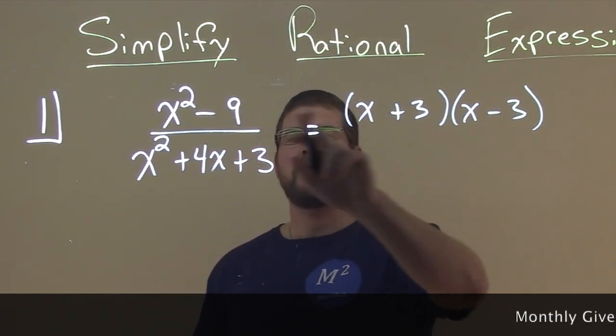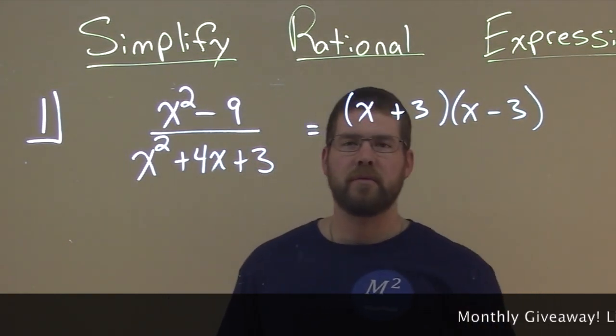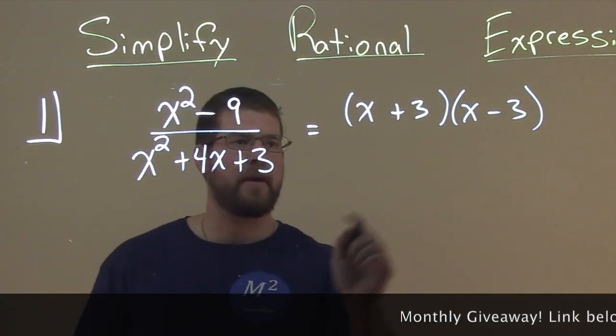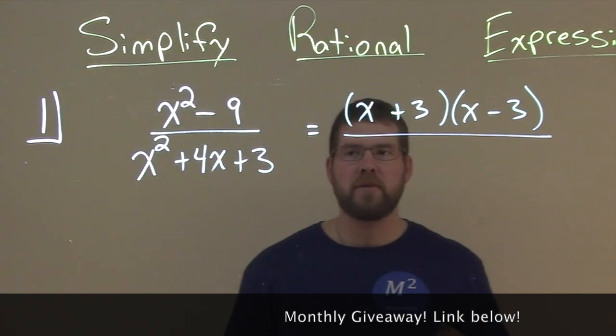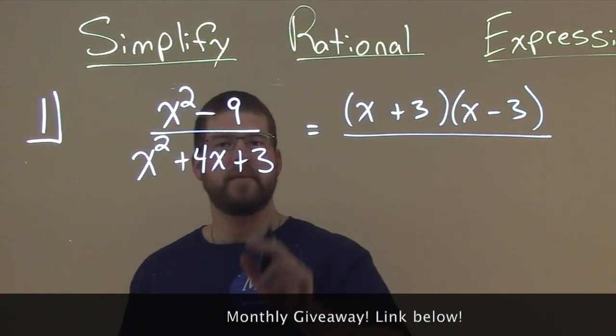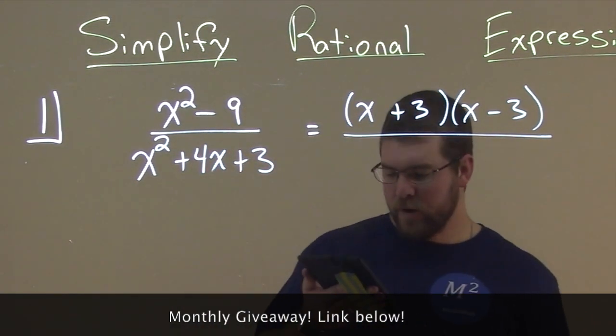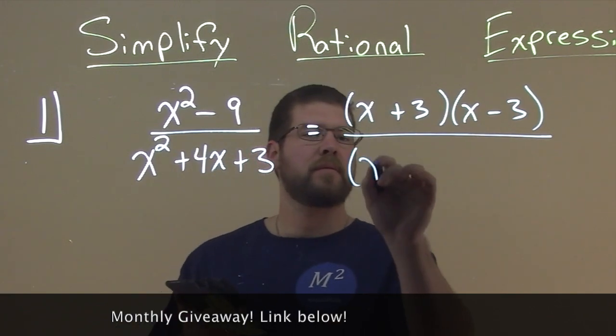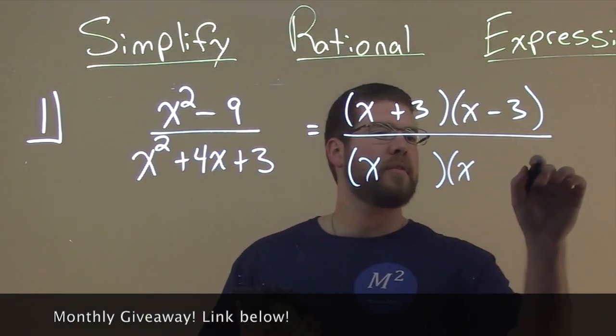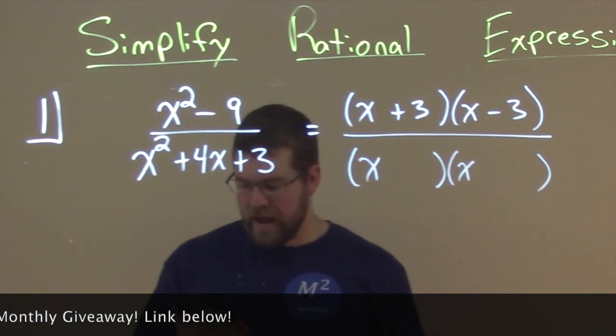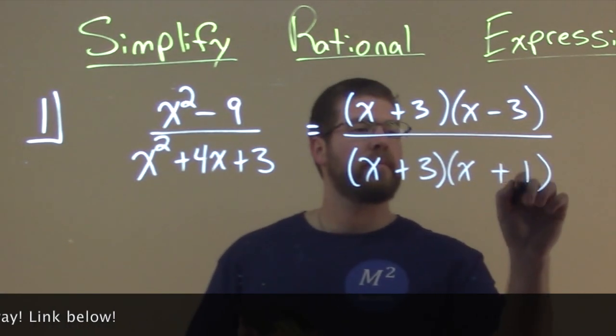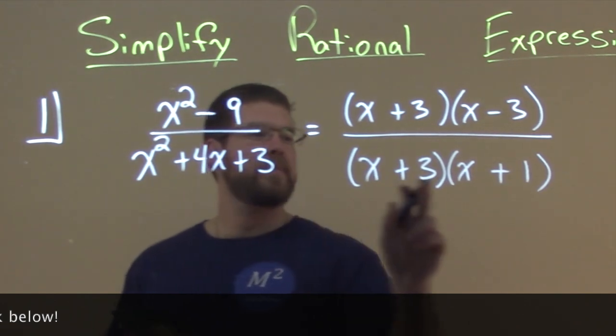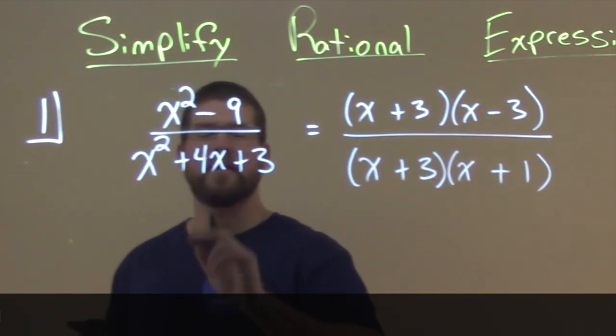There's nothing there for our b value. Denominator. Same thing. Can we factor this out? What two numbers multiply to be 3, but add to be 4? So what two numbers multiply to be 3, but add to be 4, and that's 1 and 3. 1 times 3 is 3, 1 plus 3 is 4.